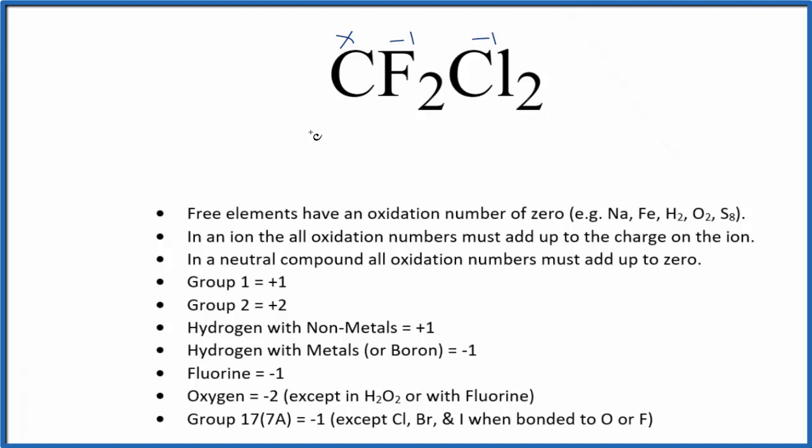So we could just set an equation up. Let's say X minus one times two, since we have two of the fluorines, plus minus one times two. All of that equals zero, since it's a neutral compound. So X minus two plus minus two is minus four. X minus four equals zero.